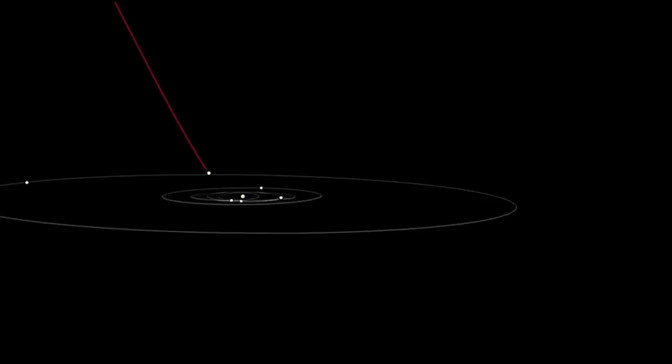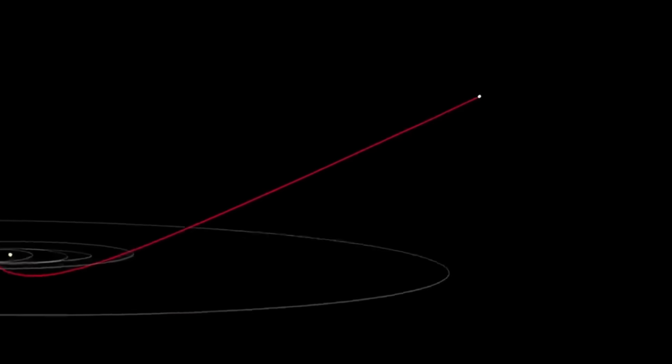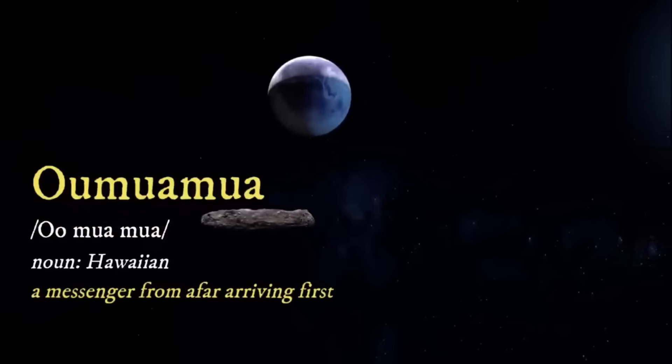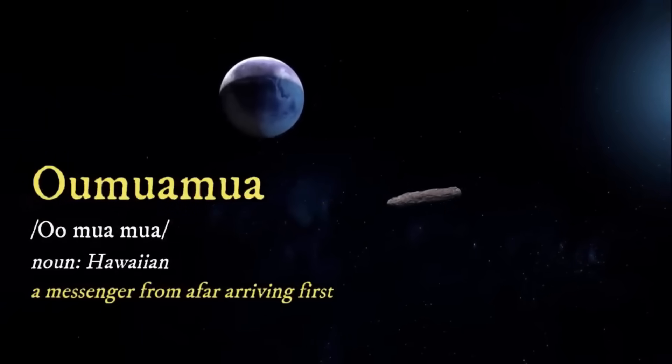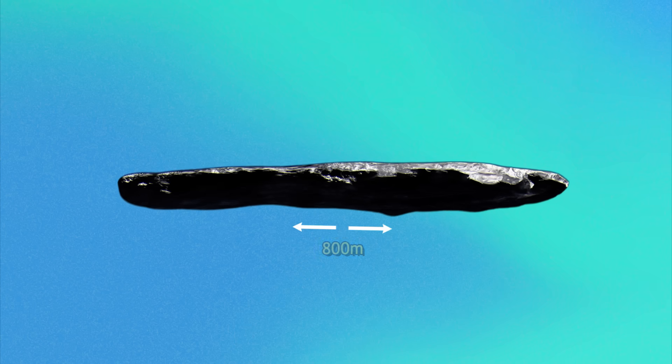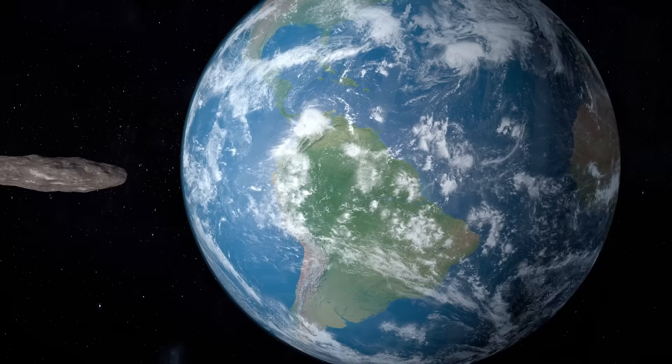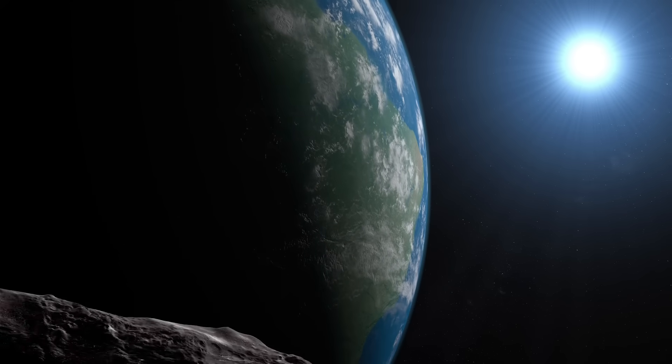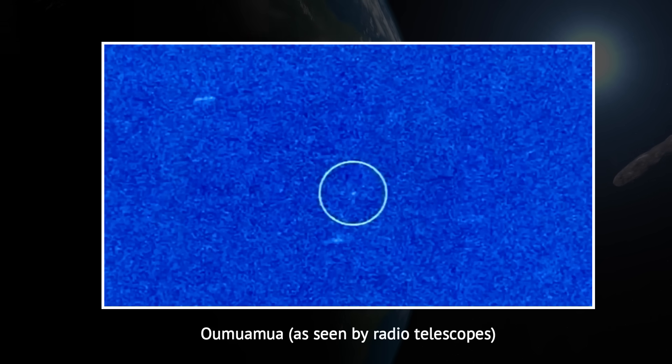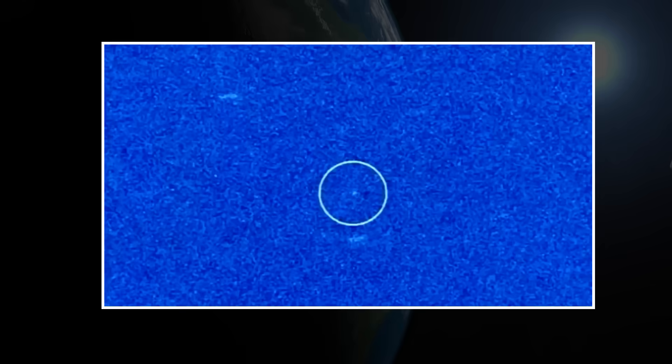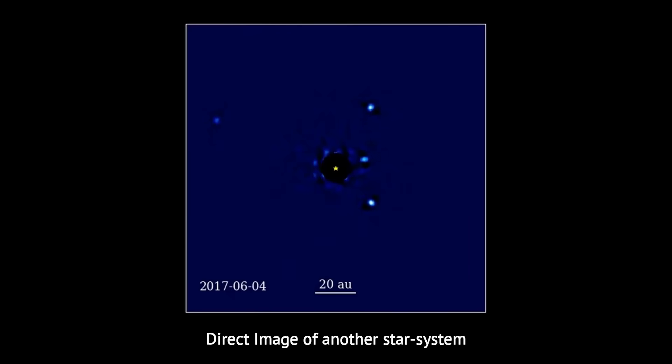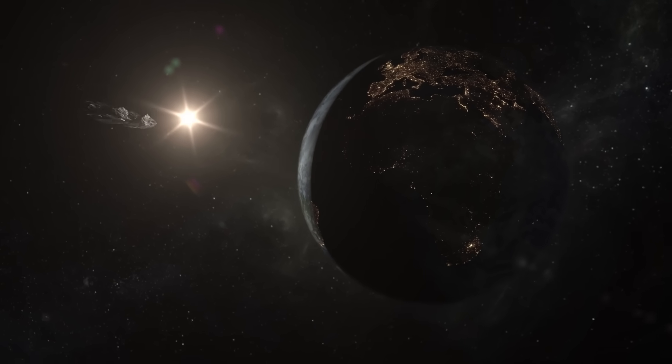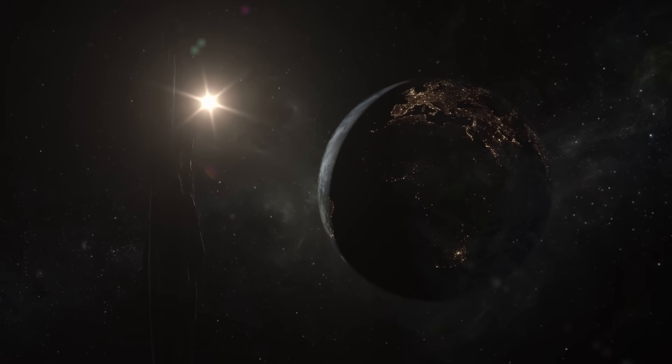In 2017, astronomers detected an unusual object that passed through our solar system, which was later named Oumuamua. Its name means messenger in Hawaiian, reflecting its status as the first interstellar object ever observed. The cigar-shaped object, estimated to be about 800 meters long and 80 meters wide, came from outside our solar system, traveling at a speed that indicated it wasn't bound by our sun's gravity. This made it an intriguing subject for study, as it provided scientists with an unprecedented opportunity to observe an object from another star system. However, its origins, composition, and even its unusual motion left many questions unanswered.